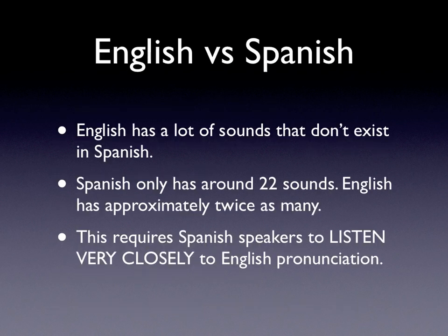English versus Spanish. I teach English mostly to Spanish people, so I know a lot about this topic. English has a lot of sounds that don't exist in Spanish. Spanish has about 22 sounds — we all know them. The vowels, for example, are five: A, E, I, O, U. English has about twice as many, approximately 44 or 45, depending on where you're from. This requires Spanish speakers to listen very closely to English pronunciation if they want to understand and later speak English, because the difference is often in sounds they don't necessarily hear.